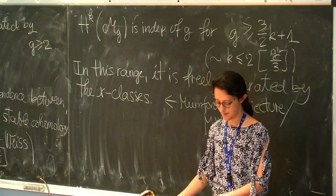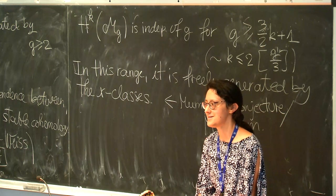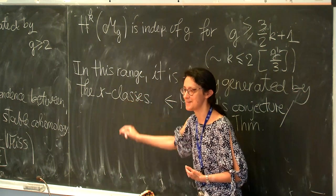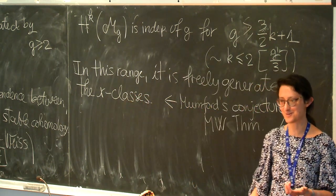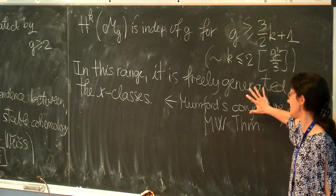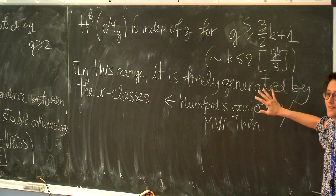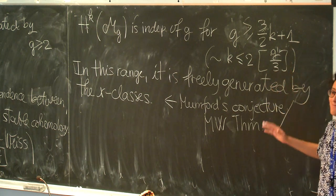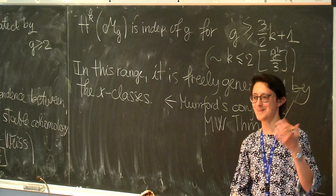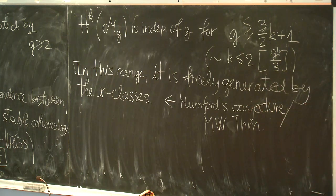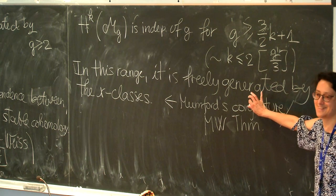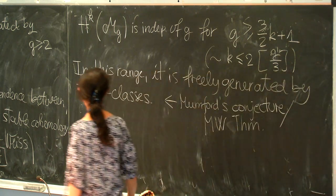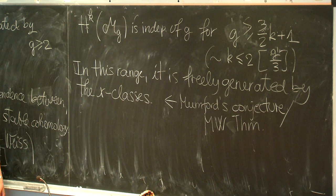g should be larger than (3/2)k plus 1. This is good because approximately it says that k should be smaller than 2g divided by 3 — the degree of the last generator we have here. In this range, cohomology is freely generated by the kappa classes. So this means that this first group of kappa classes we have here is going to be always independent. This was known under the name of Mumford's conjecture and is now the Madsen-Weiss theorem. We algebraic geometers are very happy about the fact that we know this, but at the same time when the announcement was made there was a lot of unhappiness because the proof of this theorem uses stable homotopy theory and has nothing to do with the geometry of the moduli space of curves.